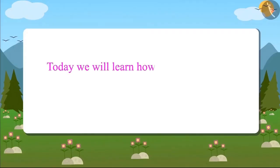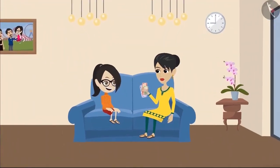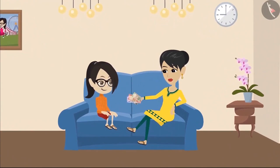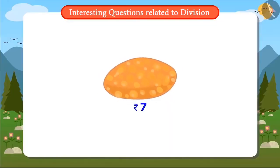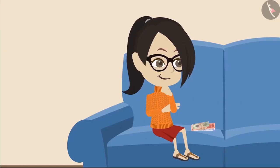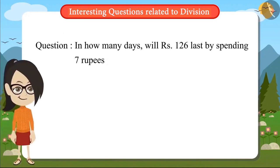Today we will learn how to solve problems in real life using division. Mummy has given 126 rupees as pocket money to Vandana and asked in how many days she will be able to spend this money. From my school canteen, I buy one kachauri each for 7 rupees, so every day I spend 7 rupees. Vandana now has to find out in how many days she will be able to spend 126 rupees by spending 7 rupees per day.